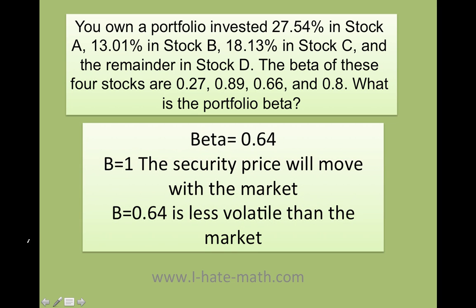Finally, what does this mean? When beta equals one, that means the security price is moving with the market. But if you have a value less than one — which in this case is 0.64 — you are actually less volatile than the market. Your portfolio beta is less volatile than the market, and that is good.